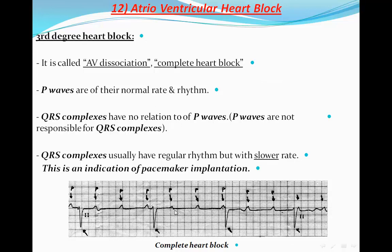There is no fixed PR interval and no relationship between the QRS complexes and the P waves. One complex may be near a P wave, but another is too far from its P wave to say it was produced by that P wave. So there is no fixed relationship between P waves and QRS complexes — the P waves are not responsible for those QRS complexes. To diagnose third degree or complete heart block, we find no fixed relation between P waves and QRS complexes.